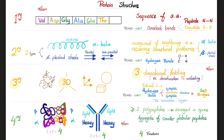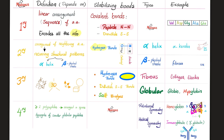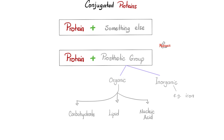Protein structure was the topic of the previous video: primary, secondary, tertiary, and quaternary. Pause and review, and here's the comparison table among them. Today we're talking about conjugated proteins. Those biochemistry professors will say something technical: it's protein plus a prosthetic group. When you ask what the prosthetic group is, they say it could be organic or it could be inorganic — which literally means something else, like anything else.